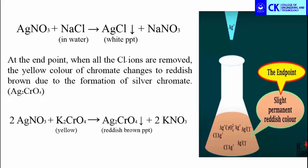We are going to see the reactions that happen while we add silver nitrate from the burette to the conical flask. We are going to take the fluoride ion solution in the conical flask — in this conical flask we have taken the water sample, in which fluoride ions are present. We are going to take silver nitrate in the burette and add it into the fluoride solution. Before that, we need to add the indicator potassium chromate. If we add silver nitrate solution drop by drop, the silver ions react with the chloride ions in the water to form silver chloride.